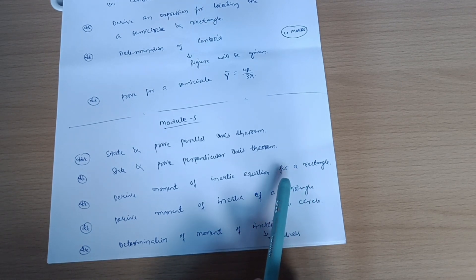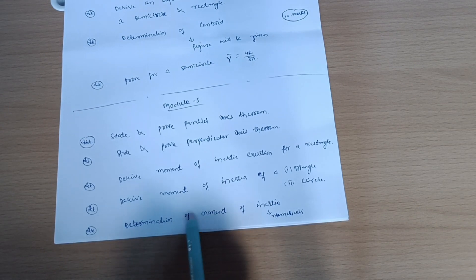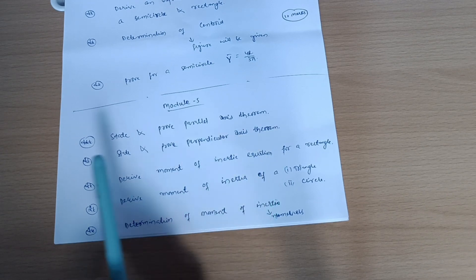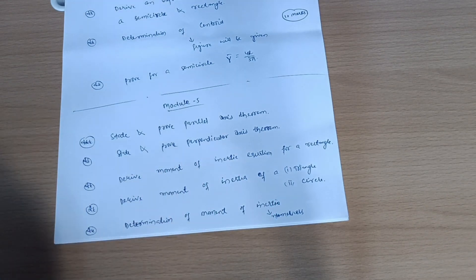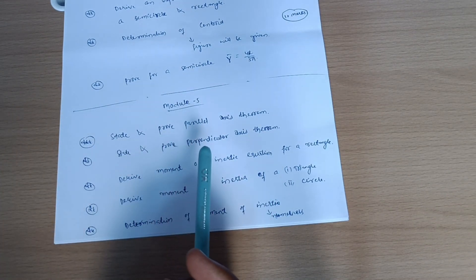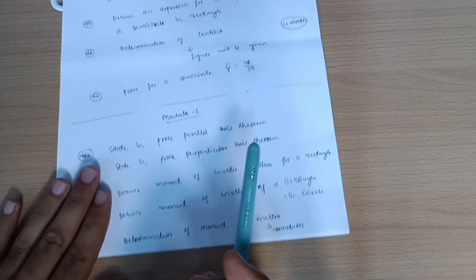Next is determination of moment of inertia - these will be the numericals. If you are convenient, go through it. If you are not convenient, then leave the numerical part from module fifth. Just go through only theoretical questions which I have mentioned here.